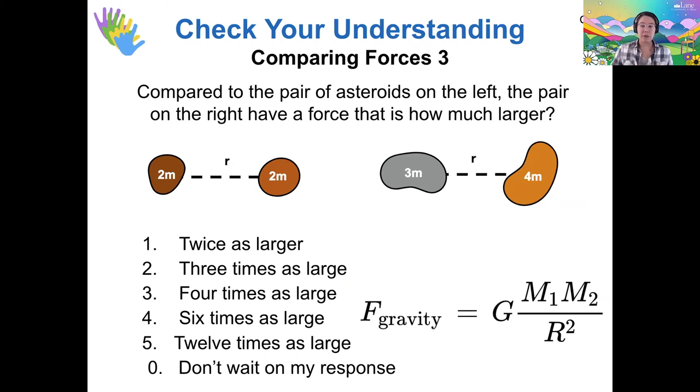So let's practice a couple of these proportionality ideas. So consider, first of all, this one: the left pair, both objects have 2M mass and they're separated by R. And then the right pair, we've got a 3M asteroid and a 4M asteroid also separated by R. So compared to the pair on the left, I'm telling you, the pair on the right has a bigger force between them. How much bigger is it using that idea of proportionality? All right, I'm seeing a vast, vast majority of votes for number 2, which is correct.